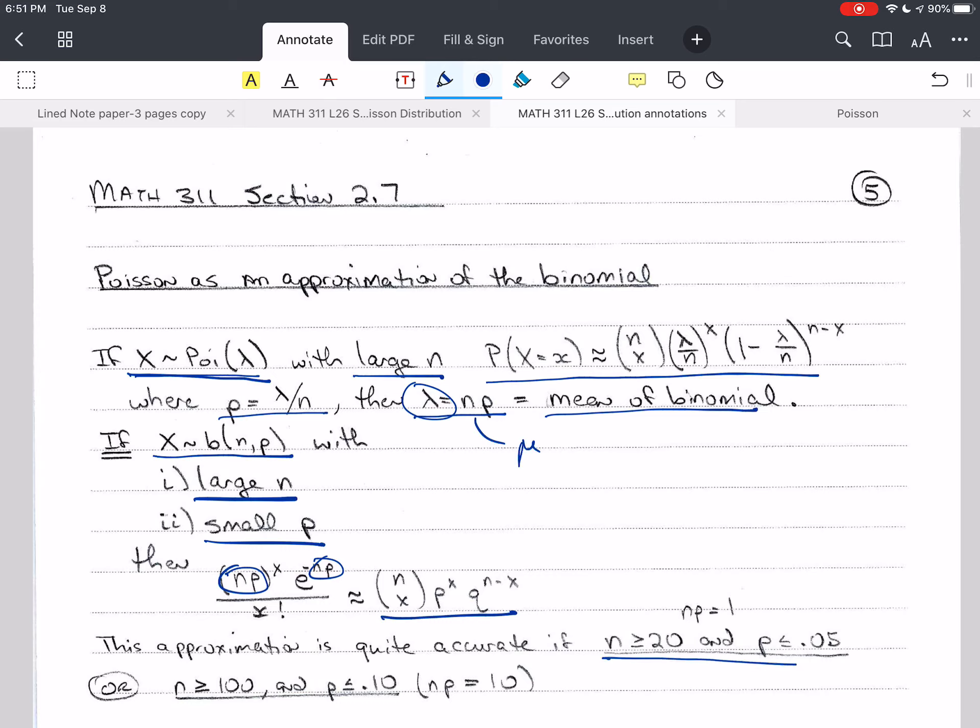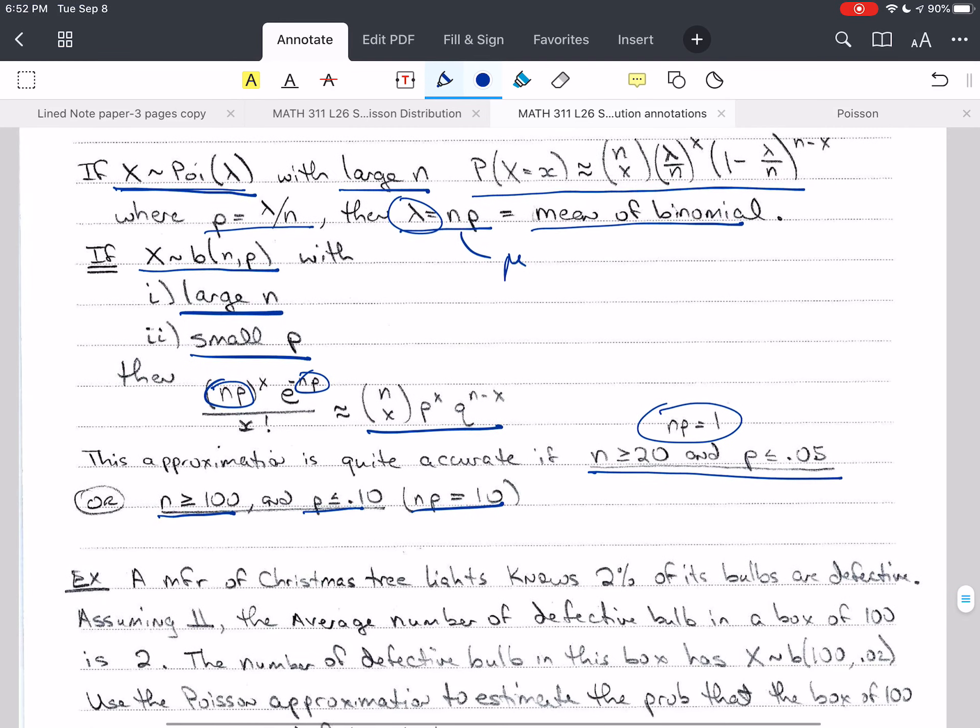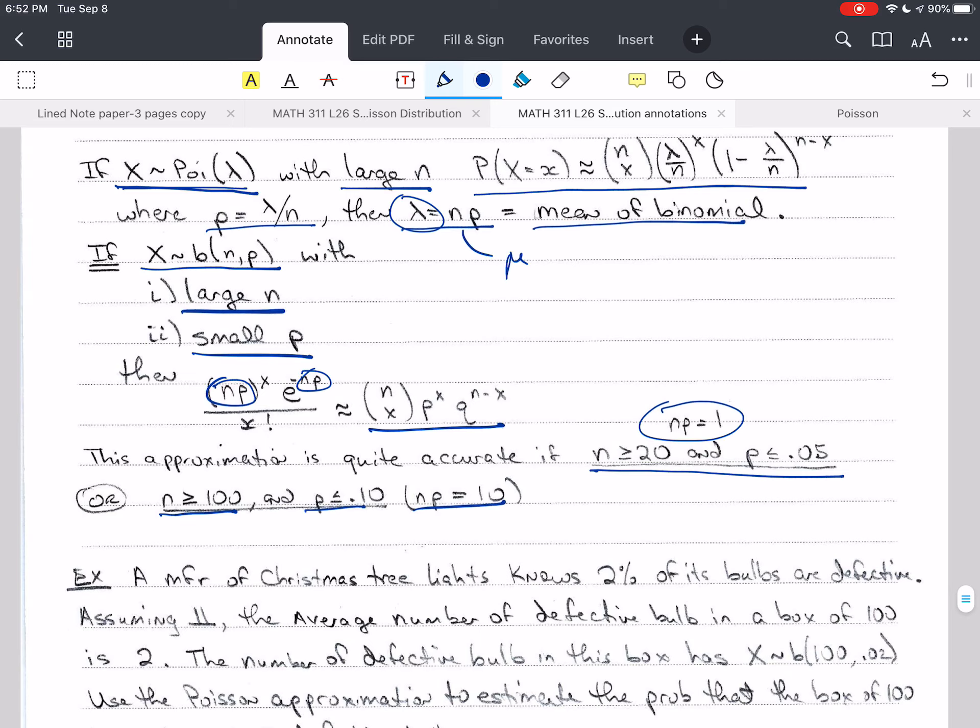And here is one case, if N is greater than 20 and P is less than 0.05, in this case, N P is 1, and that works. If we make N larger, then P can be larger, so 100 and 0.1, and N P in this case is 10. So N P doesn't stay the same, which I found interesting. But if you're pretty close to the limits, then you can get pretty good agreement.